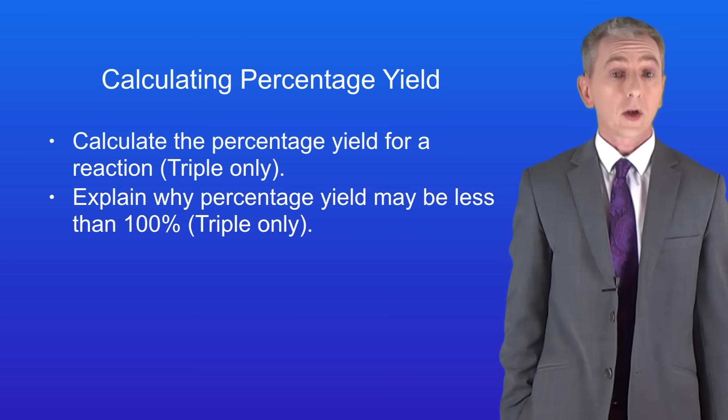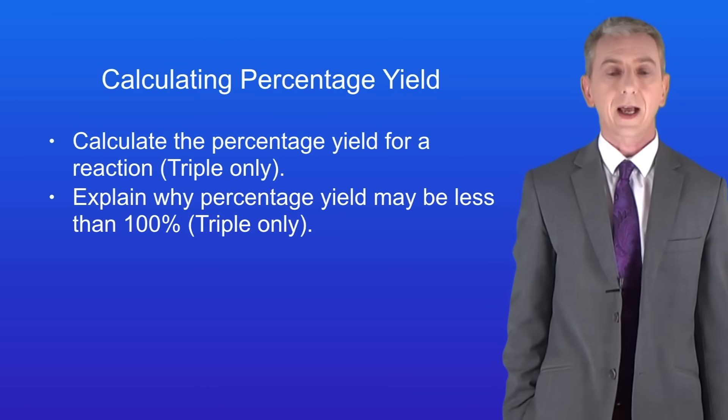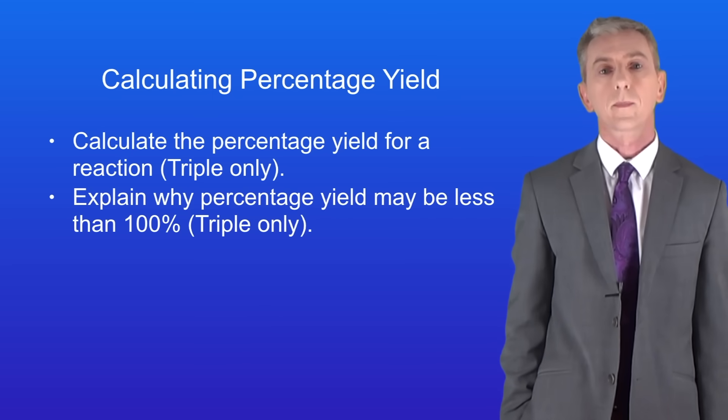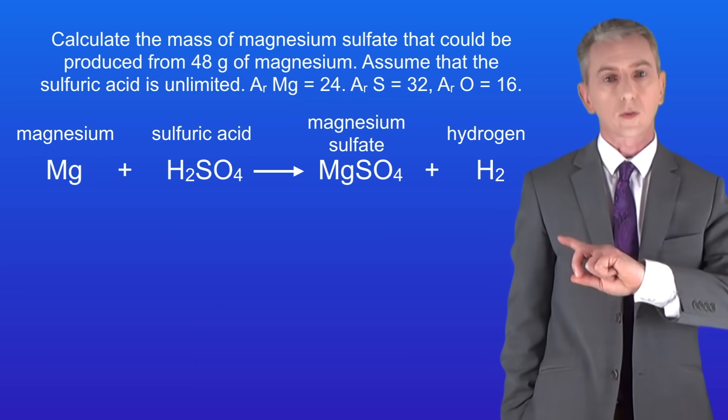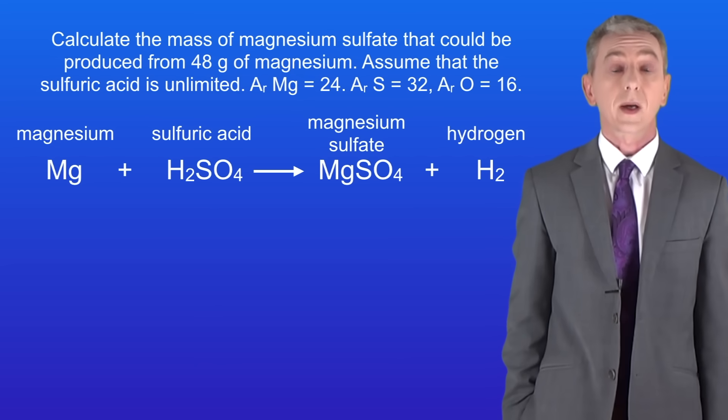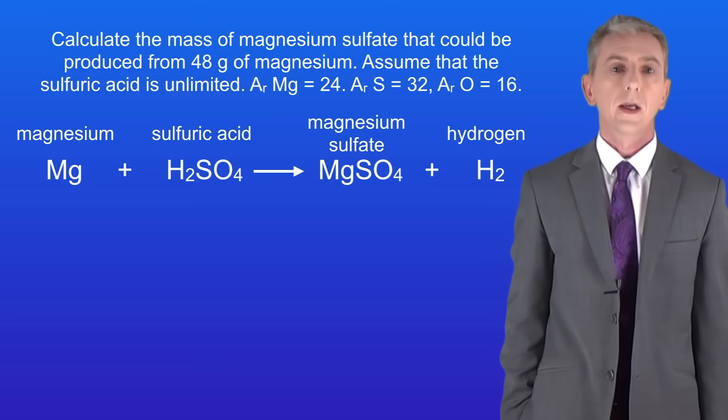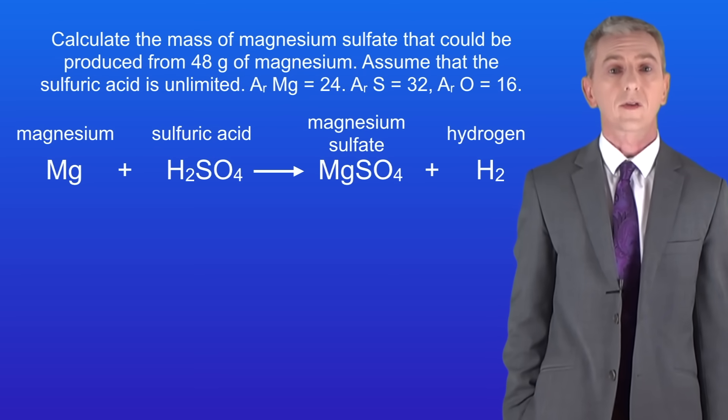In the last few videos we've been looking at chemical reactions and we've seen how to calculate the mass of products in a reaction if we're given the mass of reactants. We've seen questions such as this one. Calculate the mass of magnesium sulfate that could be produced using 48 grams of magnesium. Assume that the sulfuric acid is unlimited. I'd like you to pause the video and try this yourself.